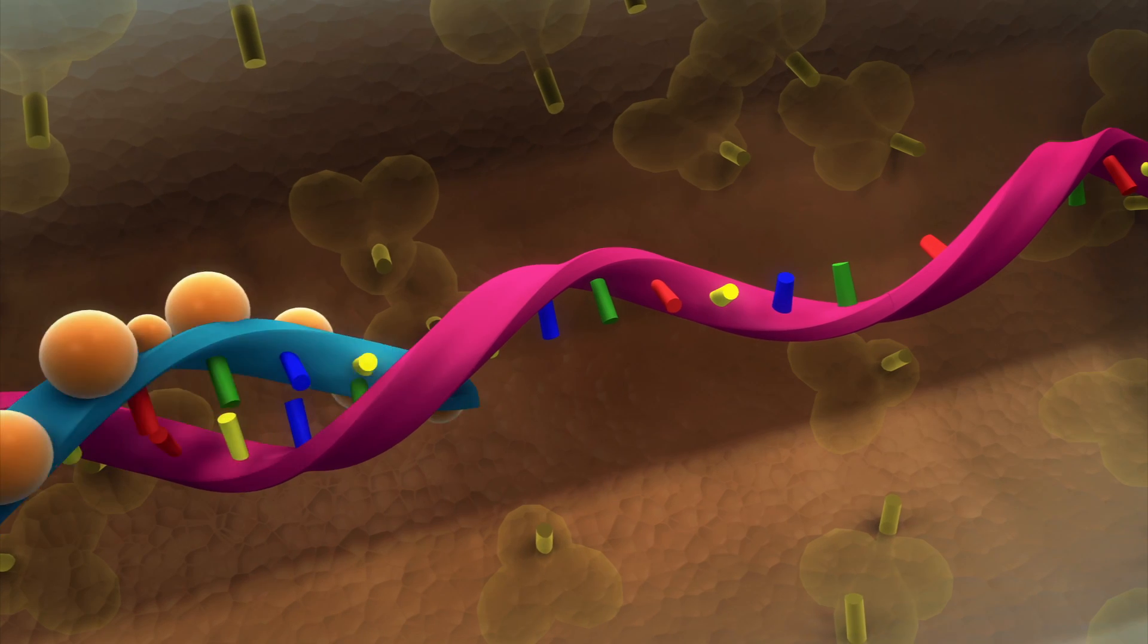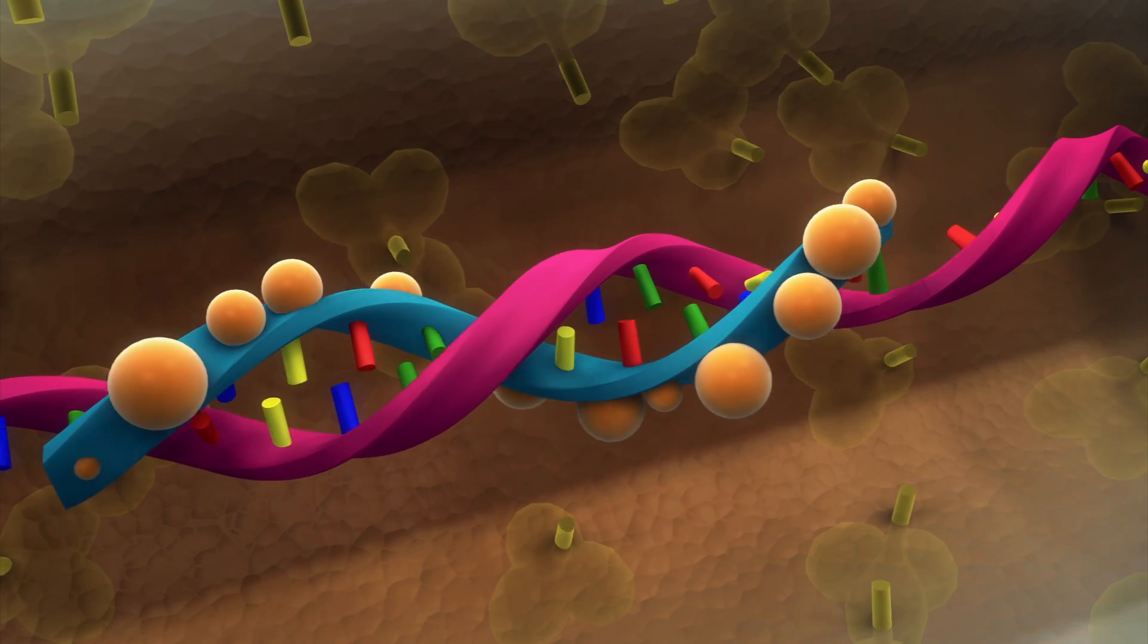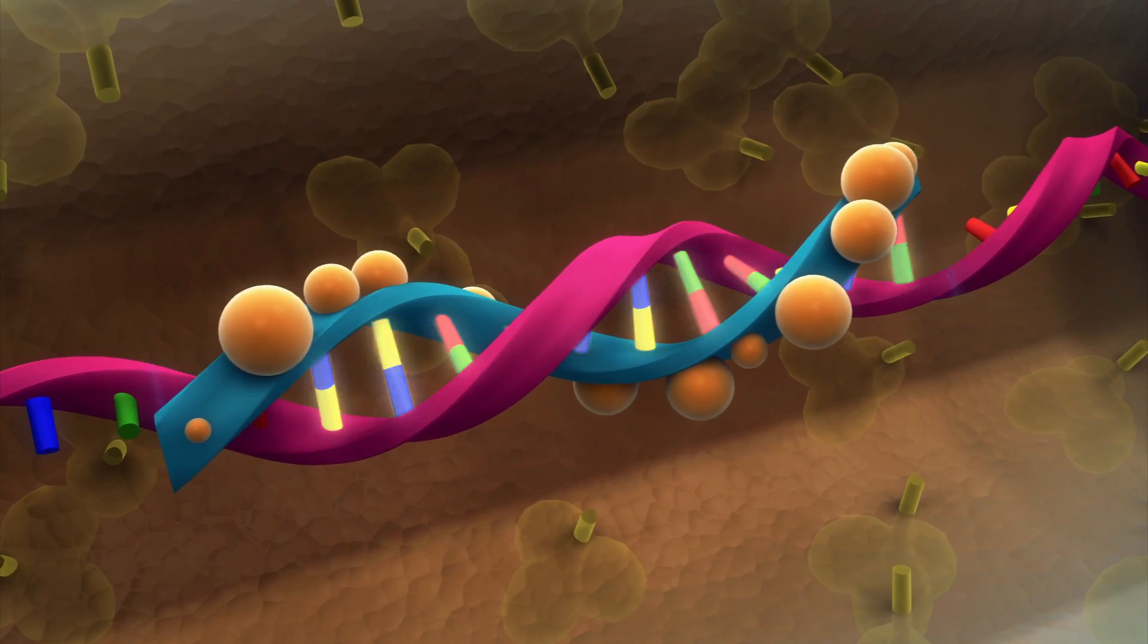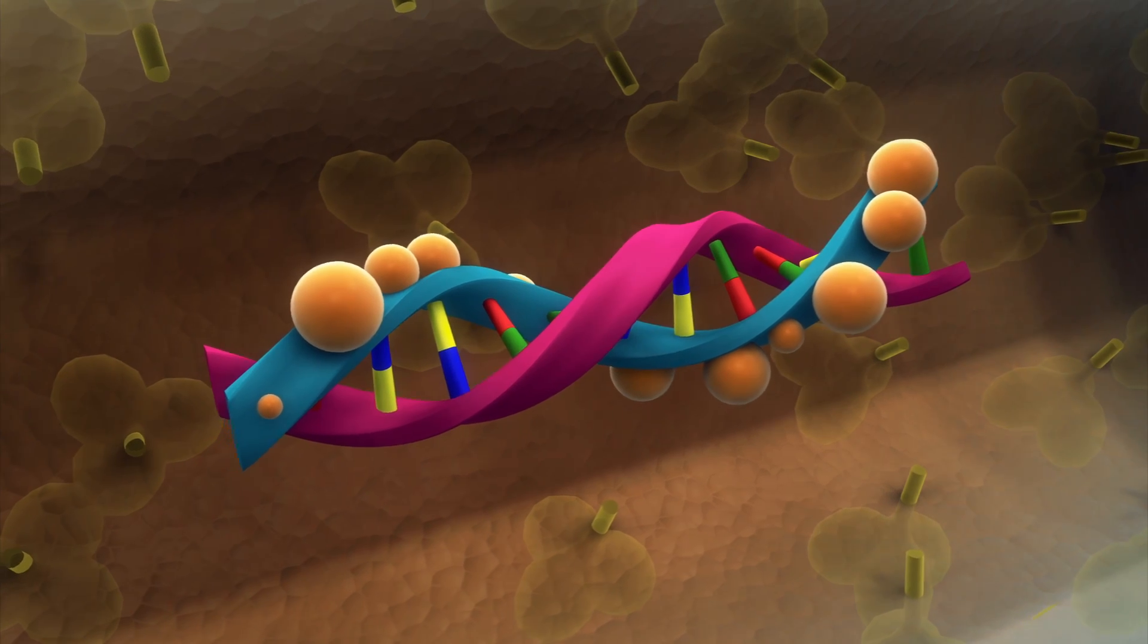When siRNA binds with viral RNA, the argonaut is activated and the viral RNA strand is cut into harmless segments incapable of replicating.